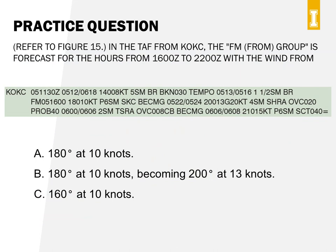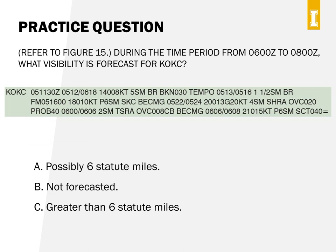Let's look at a couple of practice questions from Figure 15 in the testing supplement. In the TAF report for KOKC, the FM group is forecast for hours 1600 to 2200 Zulu — what are the winds? Take a moment to look at the TAF report and answer before we go through it together. The answer is A: 180 degrees at 10 knots, found in the relevant FM block of the TAF report. Next question: during 0600 to 0800 Zulu, what visibility is forecast for KOKC? Take a second with this one.